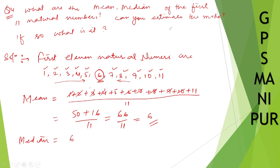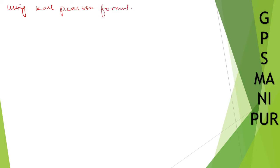Now, can we estimate the mode? Mode means the number that occurs the maximum number of times, but here every number occurs only once. So we use a formula called the Karl Pearson formula to estimate the mode.